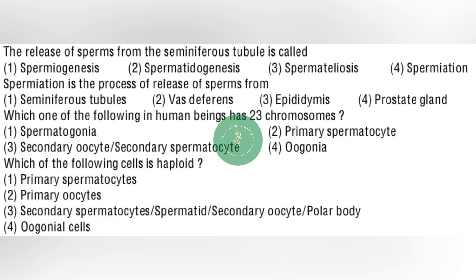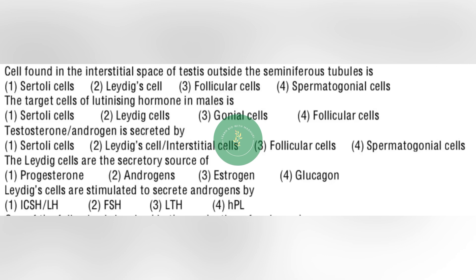Next question: which of the following cells is haploid? — option number 3: secondary spermatocytes, spermatid, secondary oocyte, or polar body. Next question: cell found in the interstitial space of testes outside the seminiferous tubules is — option number 2: Leydig cell. Next question: the target cells of luteinizing hormone in males is — option number 2: Leydig cells. Next question: testosterone or androgen is secreted by — option number 2: Leydig cells or interstitial cells.